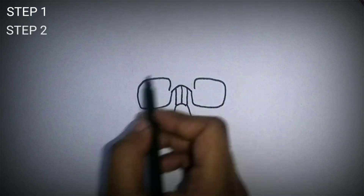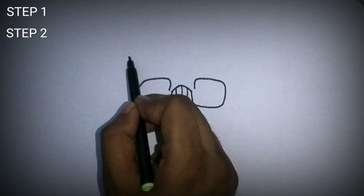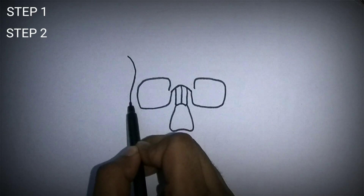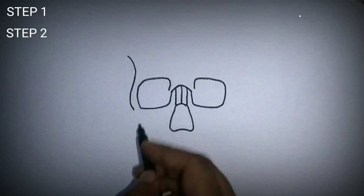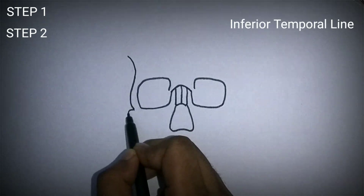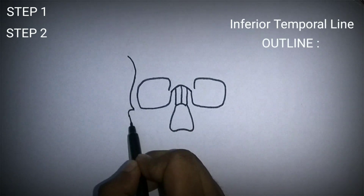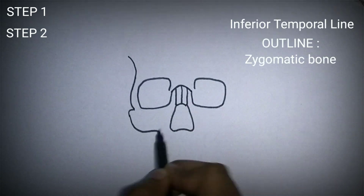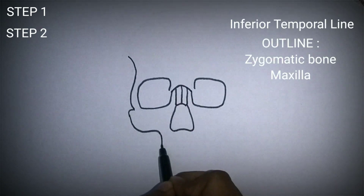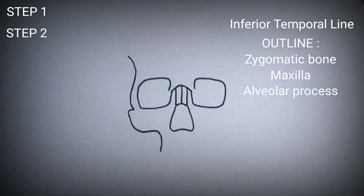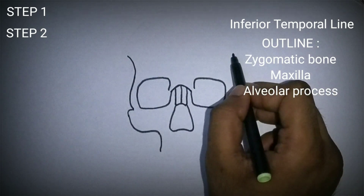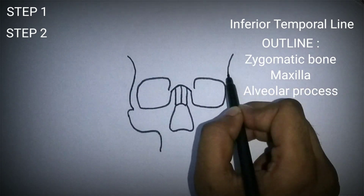In the second step, draw a curve which represents the inferior temporal line, the outline for the zygomatic, maxilla and the alveolar process of the maxilla.